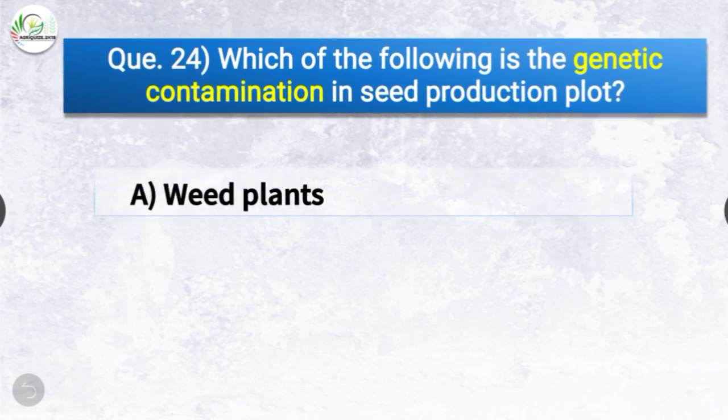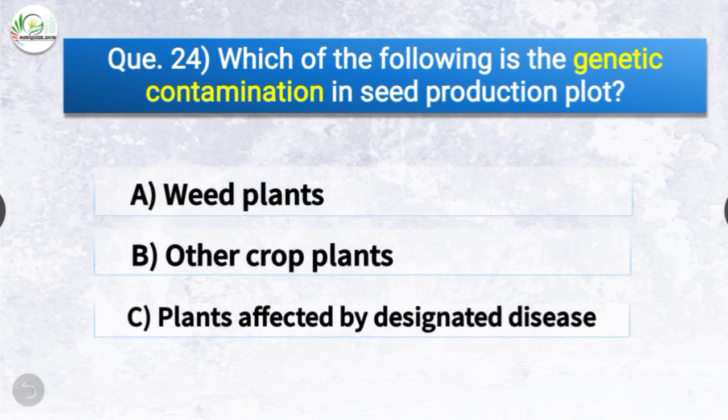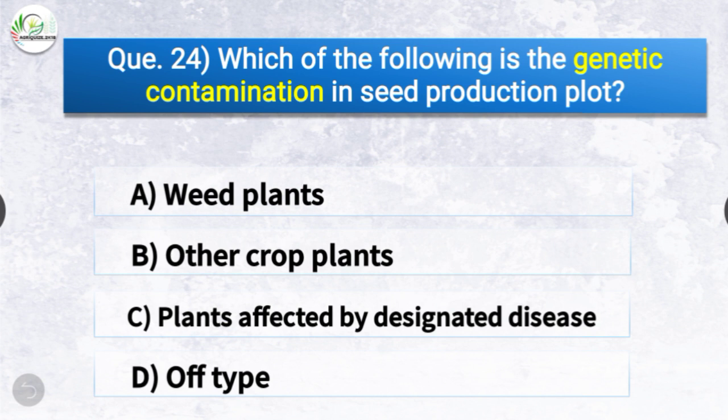Question number twenty-four: Which of the following is the genetic contamination in a seed production plot? The options are weed plants, other crop plants, plants affected by designated disease, or off-type. The correct answer is option D — off-type. Off-type is the genetic contamination in a seed production plot.